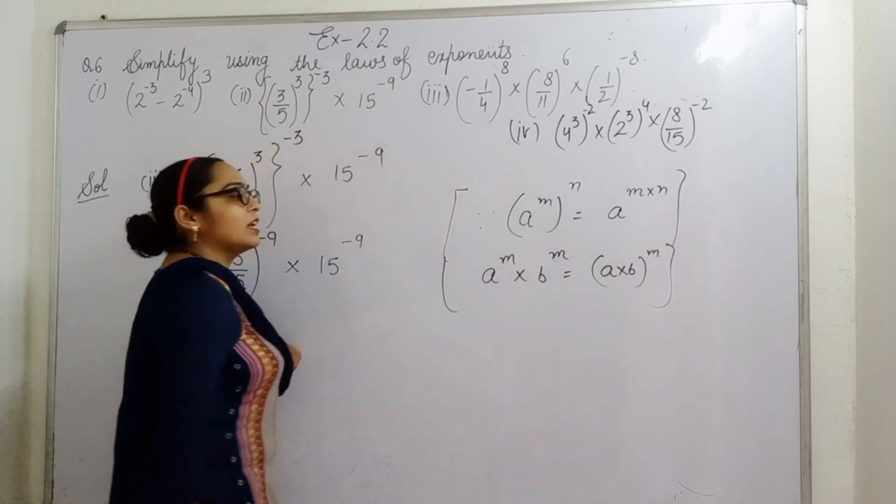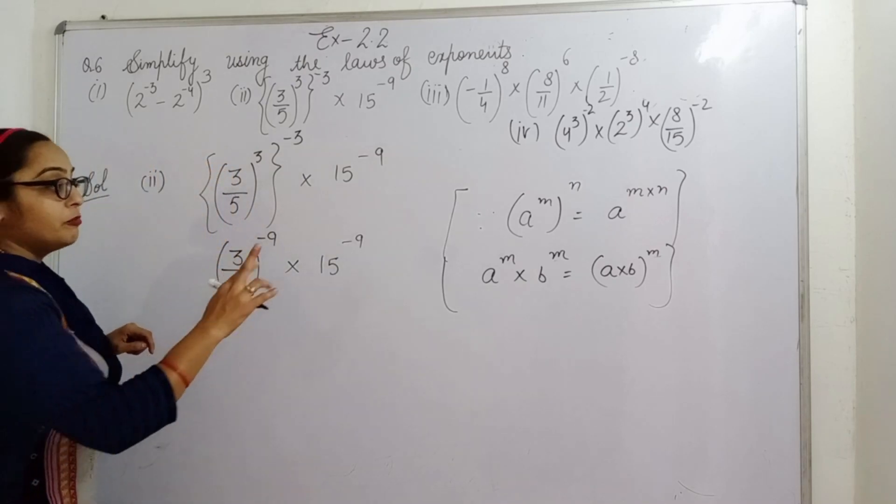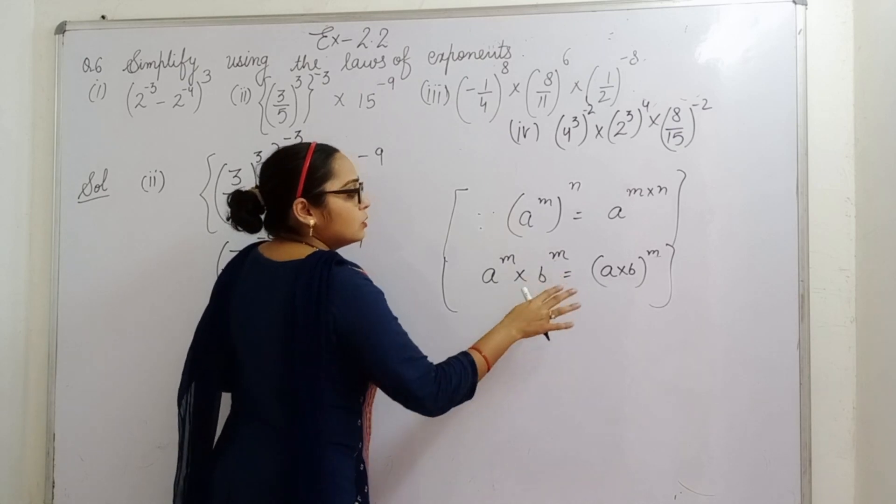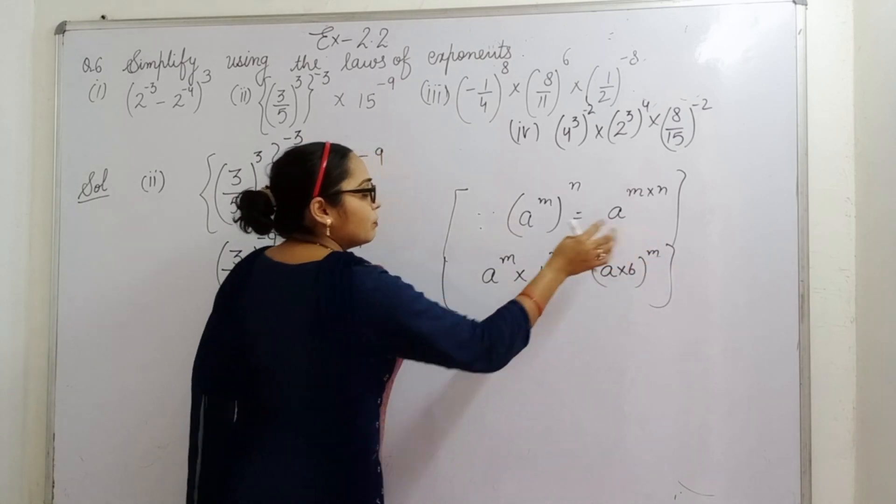If powers are same, bases different, then we basically multiply the bases and keep the power.